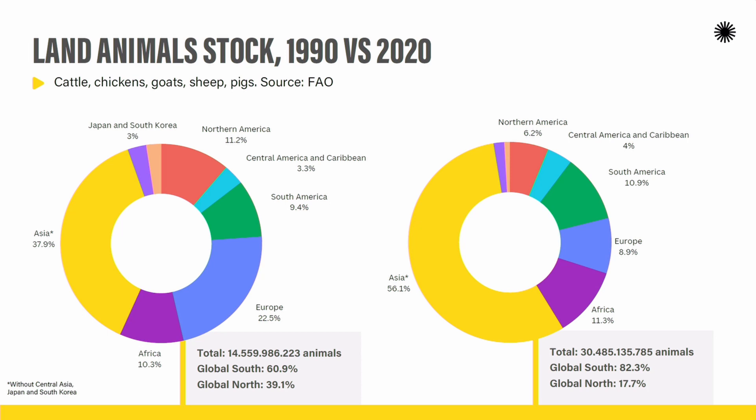Currently — and 2020 is just three years ago — most of the animals, at least 82%, that are exploited for food are living in the Global South. Particularly notable: Asia almost tripled the number of animals exploited in the food industry.